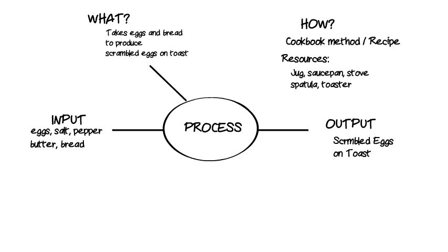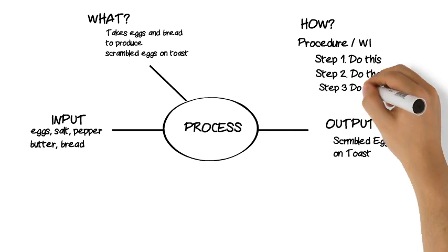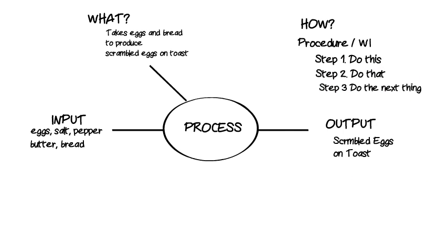Other terms for the method in your cookbook are procedure and work instruction. So the procedure is simply a fixed, step-by-step way of doing something the same way every time. This is important for having an outcome of predictable quality. The procedure is the answer to the second question: how. Some people, myself included, like to list the required resources under the question: what.